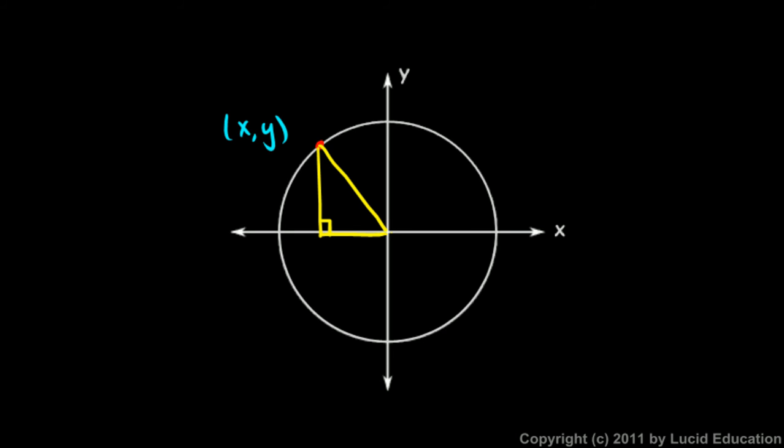In fact, I can do that in any quadrant. If I rotated all the way around into the third quadrant, my terminal side would be over here, and I could still draw a little right triangle there sitting on the x-axis.